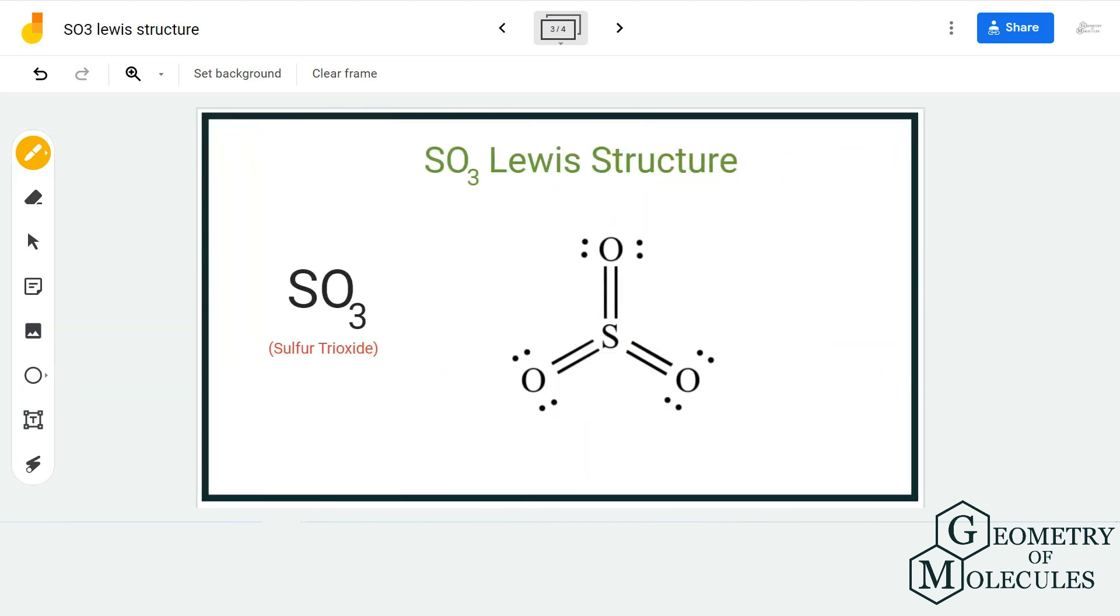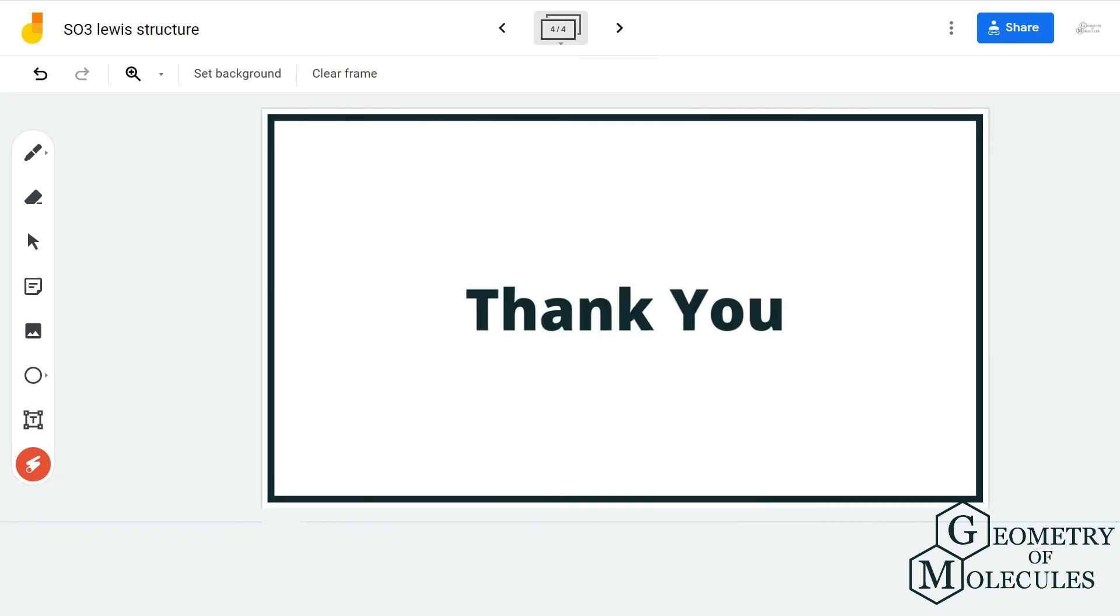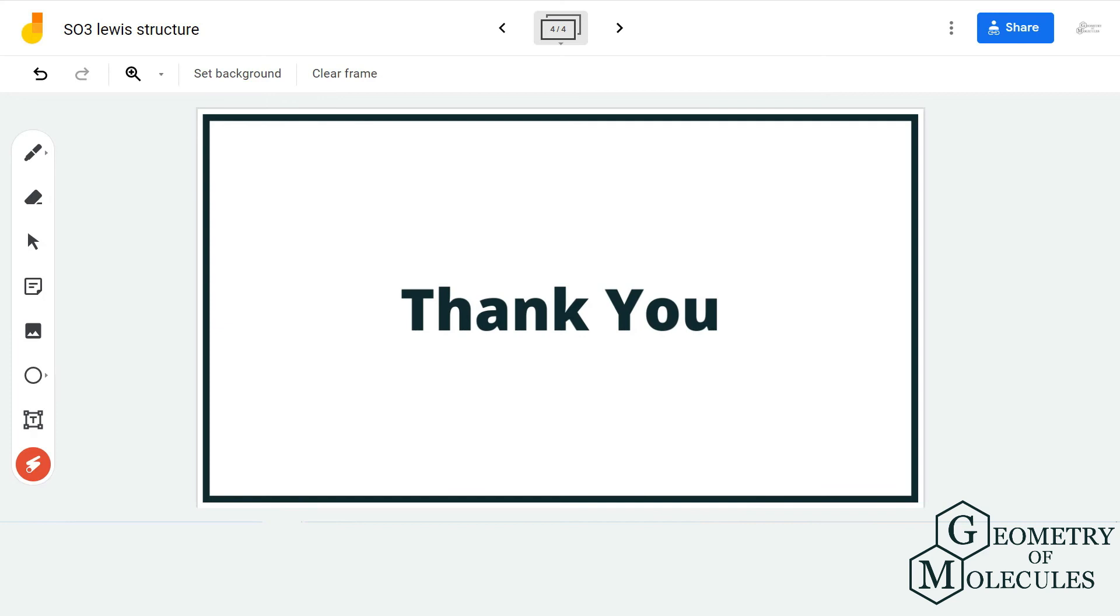So this is the Lewis structure of SO3 in which sulfur atom is forming three double bonds with three oxygen atoms. I hope this video helps you to understand the Lewis structure of SO3. For more such videos on Lewis structures, molecular geometry, and polarity of molecules, make sure to subscribe to our channel. Thank you for watching.